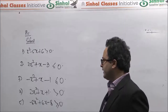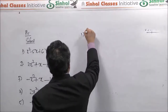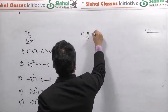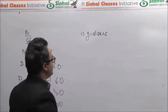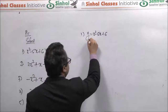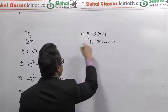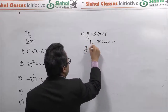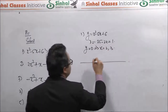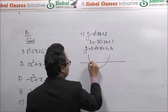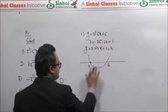Suppose these are quadratic inequalities we want to solve. Starting from the first one: the coefficient of x squared is already positive, so we look at the discriminant, which is 1 — it is positive. Putting y equal to zero gives x as 2 and 3. So relative to the x-axis, it is a parabola opening up intersecting the x-axis at 2 and 3.